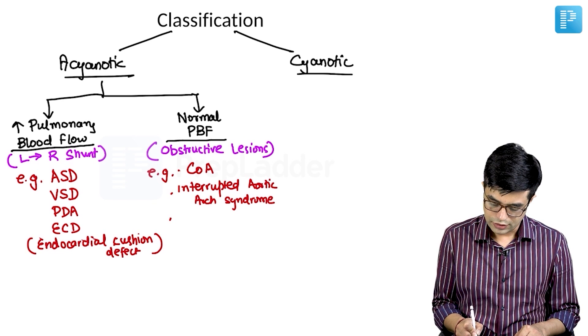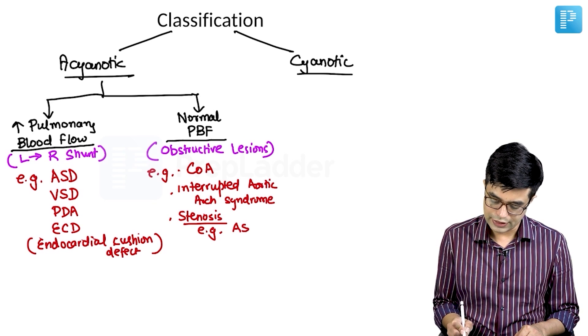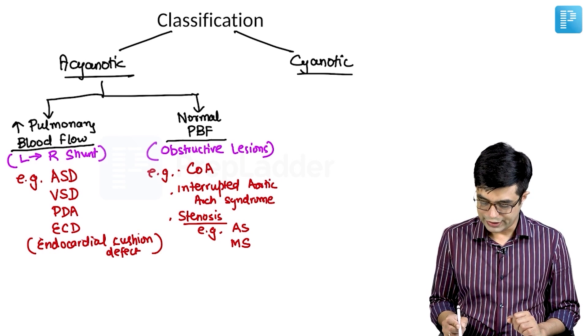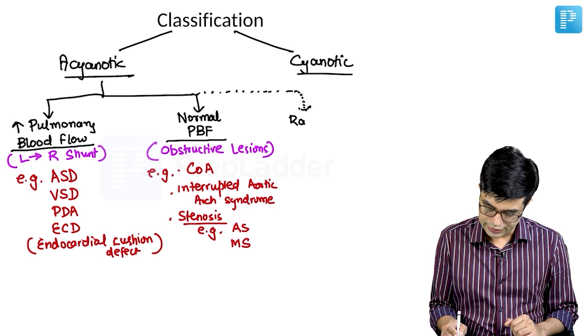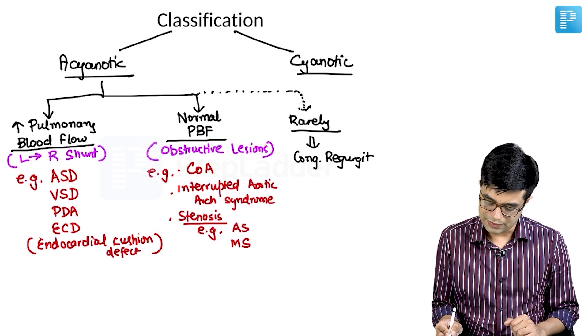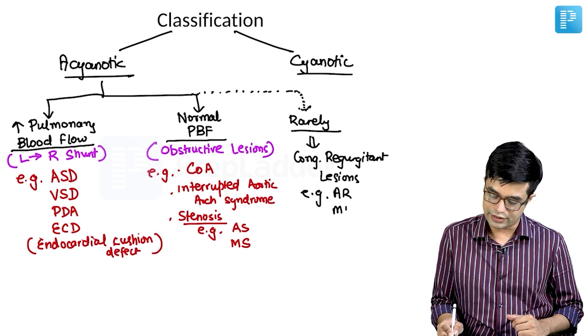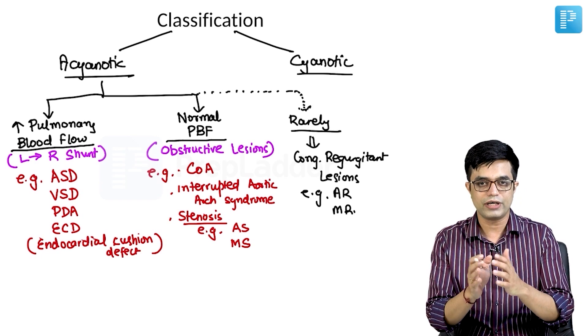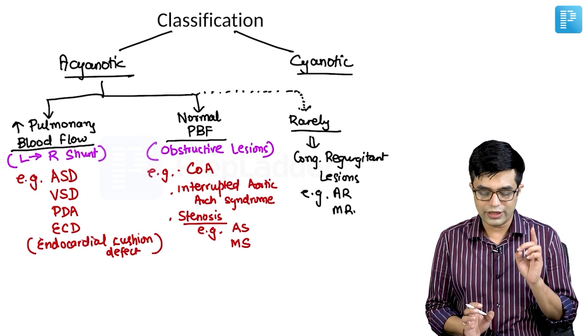And third category is your stenotic lesions. So congenital stenotic lesions, for example, congenital aortic stenosis and congenital mitral stenosis will be included in this category. Although it is not mentioned in most classifications, I am putting a small dotted arrow that sometimes, although rare, rarely, there are a few conditions called congenital regurgitant lesions. I am putting it in star because this is not mentioned in many textbooks. But congenital regurgitant lesions like aortic regurgitation and mitral regurgitation will also be included as a separate subcategory in acyanotic diseases. So these are all acyanotic conditions.